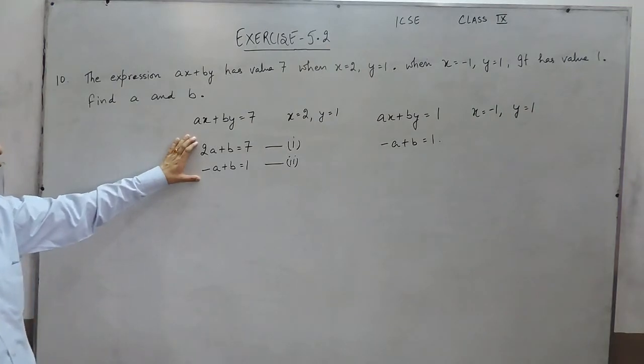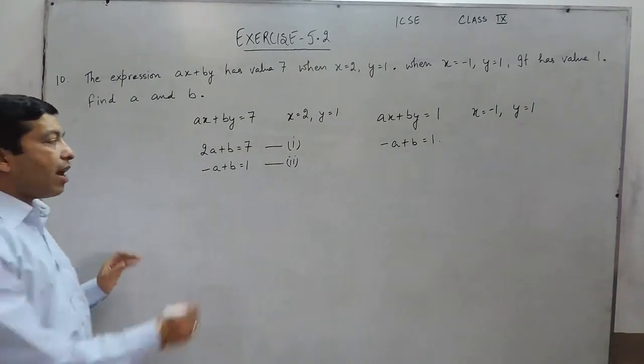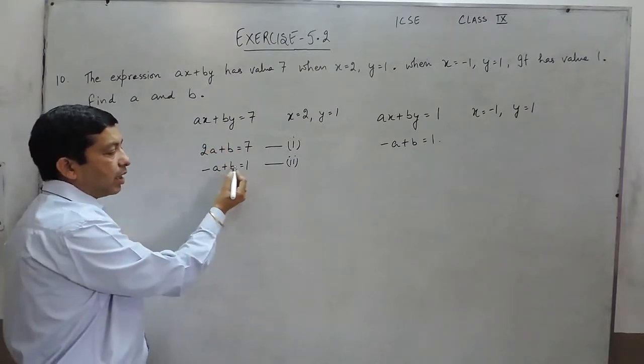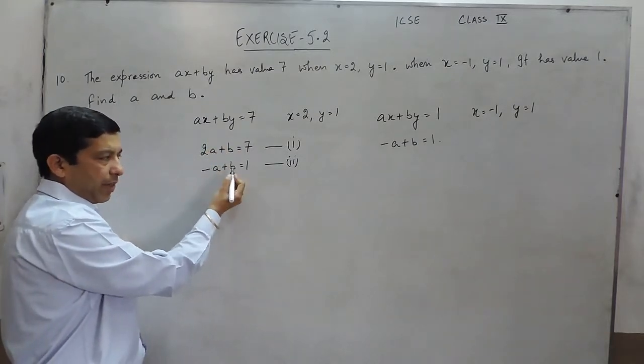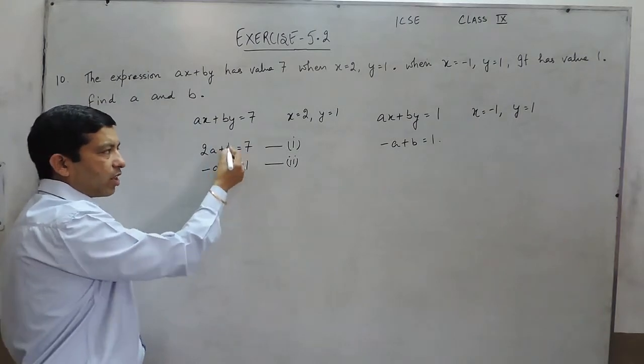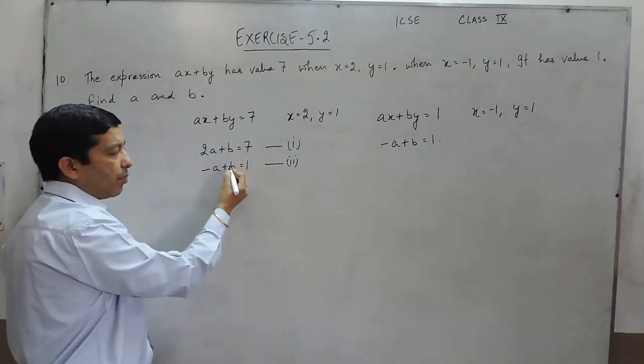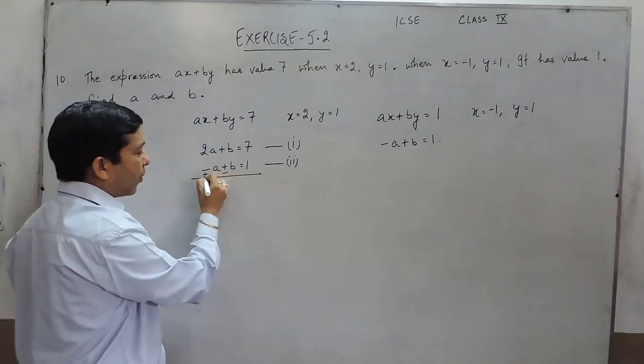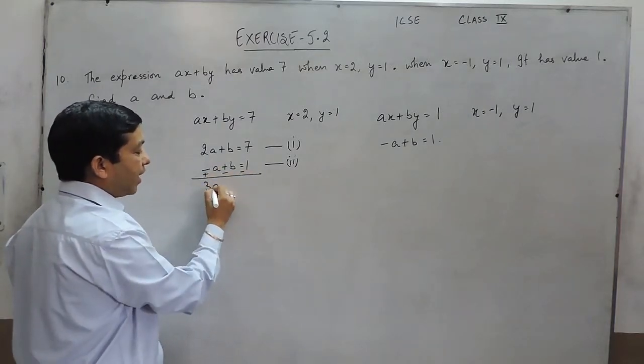Now as we have already told, the two simultaneous equations can be solved easily when the coefficient of any of the variable either a or b are equal. Here the coefficient of these two is b and b or 1 and 1, so they are equal. We are subtracting the two equations.